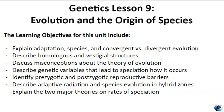The learning objectives for this unit include explaining adaptation, species, convergent versus divergent evolution, homologous and vestigial structures, misconceptions about the theory of evolution, genetic variables that lead to speciation and how that occurs. We'll identify pre-zygotic and post-zygotic reproductive barriers, talk about adaptive radiation and species evolution in hybrid zones, and explain the two major theories on the rates of speciation.